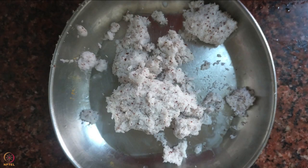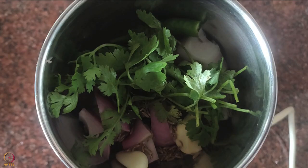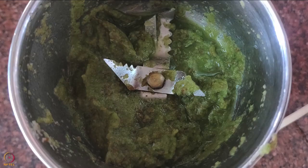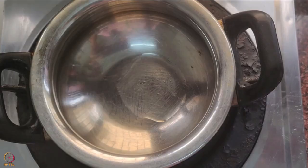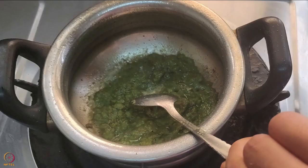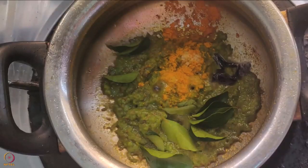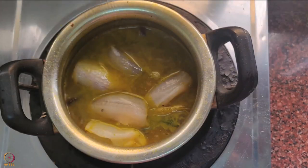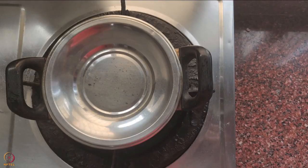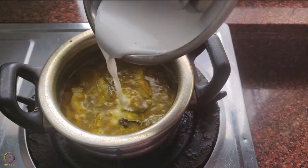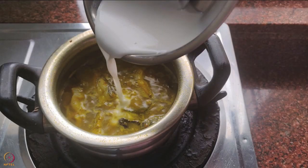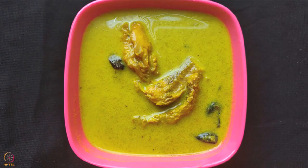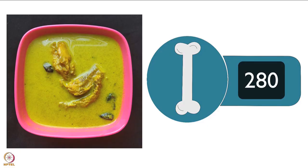Keep the coconut residue aside for later use. Grind onion, chilli, cumin seeds, garlic, and coriander leaves with a little water to make a thick paste. Heat oil or ghee, add the paste and sauté for 2–3 minutes. Add curry leaves, kokum, and turmeric powder. Mix well, add 1/2 cup water, then add the marinated fish pieces. Cover and cook on low flame for 7–10 minutes. Add prepared coconut milk, stir, cook for 2 more minutes, then switch off flame. Bombay duck fish curry is ready — one serving gives around 280 mg of calcium.